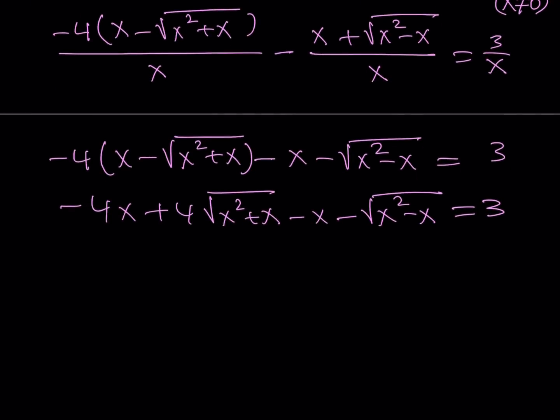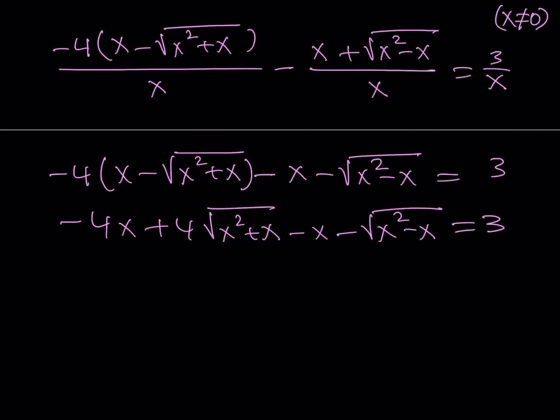Great. Now what I'd like to do here is I want to combine like terms as much as possible, leave the radical on one side, and then square both sides so that way I can just simplify the expression. Let's go ahead and do that. I'm going to be getting something like this: 4 times the square root of x squared plus x minus square root of x squared minus x. Negative 4x minus x is going to give me negative 5x. If I add both sides, then we'll have 5x plus 3.